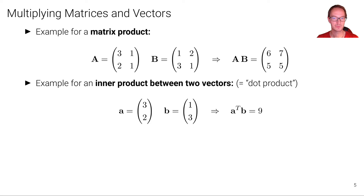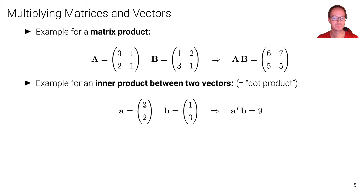Here is an example for an inner product between two vectors. Vectors are basically matrices where one dimension is collapsed to 1, so we can do matrix multiplication with them in two different ways. One is called the inner product or dot product, where we take two vectors and get a scalar out. Assume we have the vector 3, 2 and the column vector 1, 3. We take the transpose of the first vector to make it a row vector and multiply it with the column vector 1, 3: 3 times 1 plus 2 times 3 equals 3 plus 6 equals 9. The inner product between two vectors always yields a scalar.